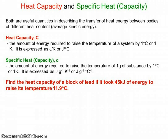Here are examples. First, we want to find the heat capacity of a block of lead if it took 45 kilojoules of energy to raise its temperature by 11.9 degrees. If we look up at what heat capacity is, it's energy to raise a certain temperature. So I'm going to take my heat energy, my Q, or my 45 kilojoules, and divide it by the temperature change it caused, 11.9 degrees Celsius, and we see that it takes 3.78 kilojoules to raise that block by 1 degree Celsius.